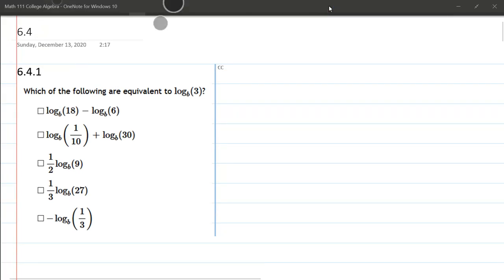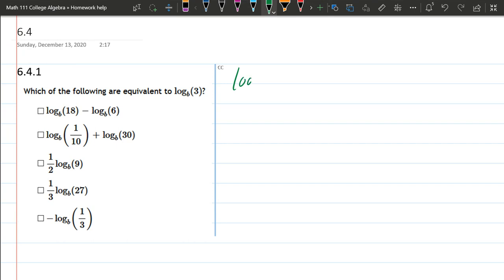I'm just going to rewrite the first one here. We have log base b of 18. We don't know what b is, and that's okay, it won't matter. Log base b of 6. We're subtracting. We just saw that subtraction outside is division inside.